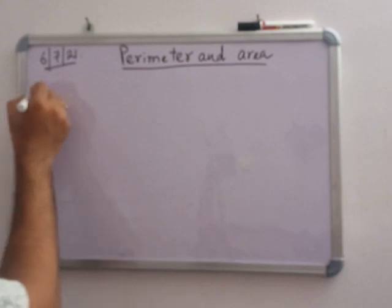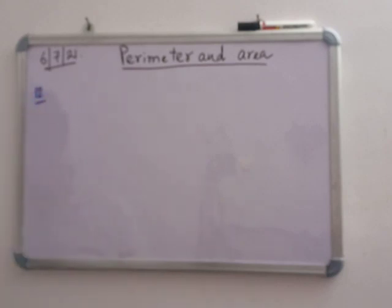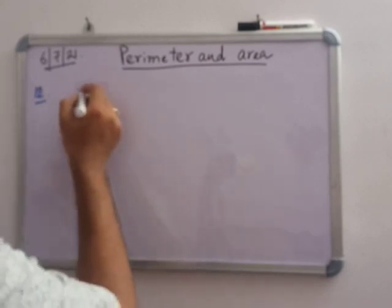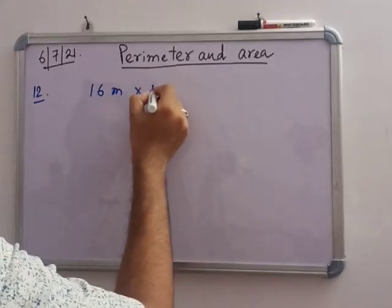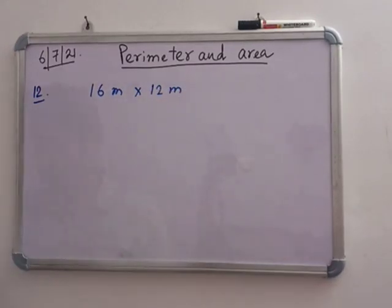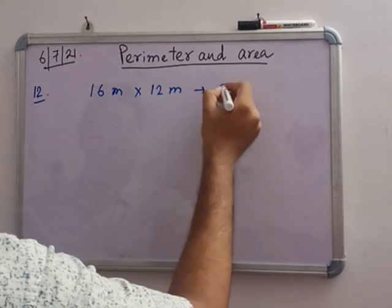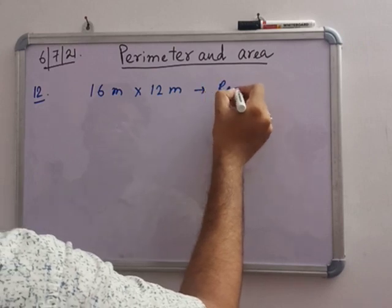Now in number 12, rectangular hall is 16 meter long and 12 meter wide. So 16 meter by 12 meter, rectangular hall.